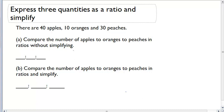First, I want to compare the number of apples to oranges to peaches in a ratio without simplifying. So without simplifying, I'm just going to take the number of apples, 40, the number of oranges, 10, and the number of peaches, 30.